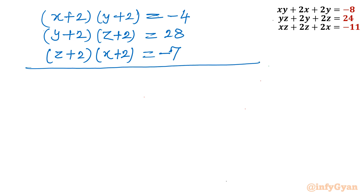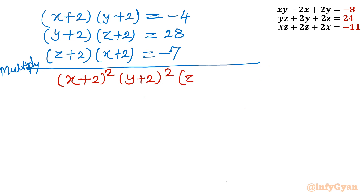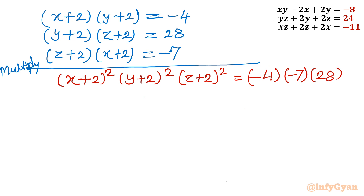Now I will multiply all three equations together. On the left-hand side we get (x plus 2) squared times (y plus 2) squared times (z plus 2) squared. On the right-hand side: negative 4 times negative 7 times 28. That equals 28 squared, since 4 times 7 is 28.